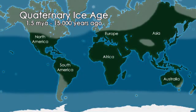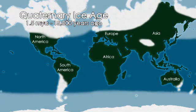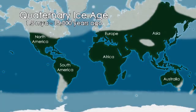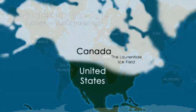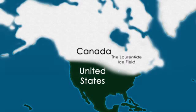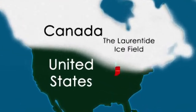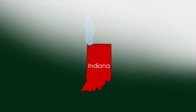The last glacial age, and the only one to occur since humans appeared, began 1.5 million years ago and receded 15,000 years ago. During that time, the Laurentide Ice Field covered all of Canada and extended as far south as Indiana.